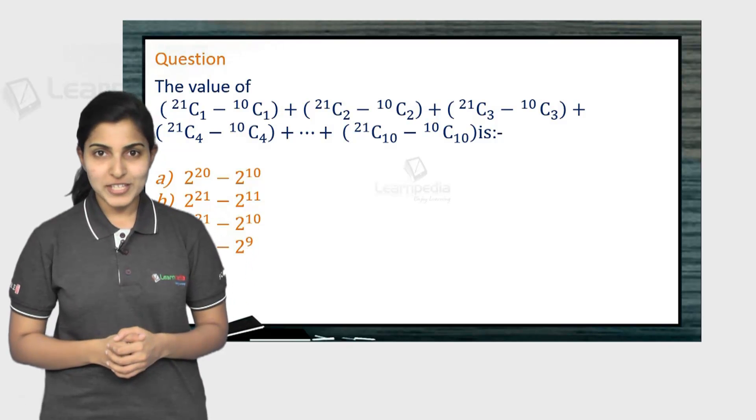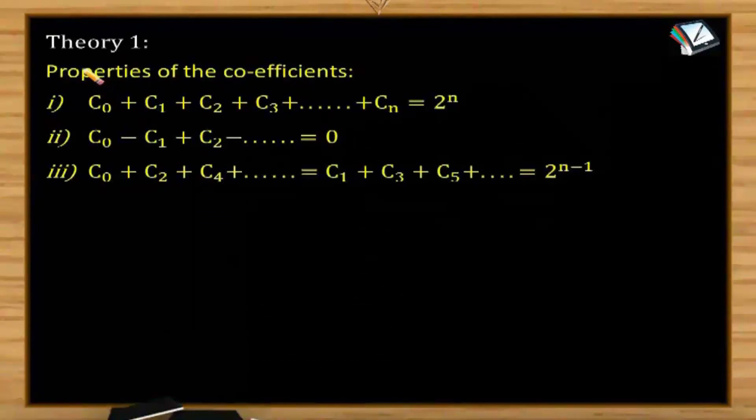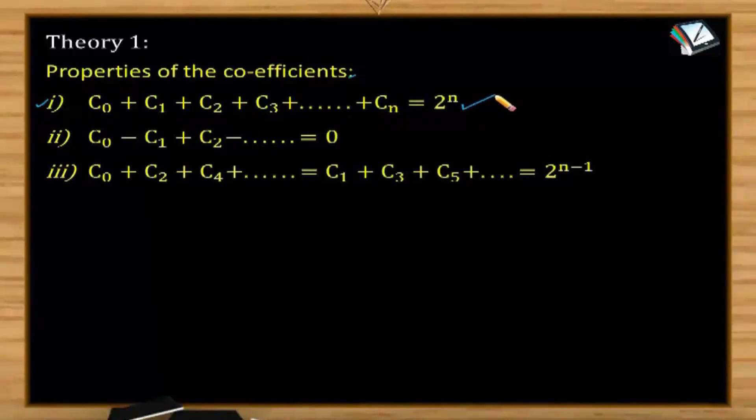To understand the concept behind this question, go ahead and watch this video. Theory number 1, the properties of coefficients. Property number 1: C0 plus C1 plus C2 plus C3 plus so on and so forth plus Cn equals 2 power n.